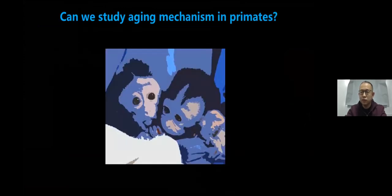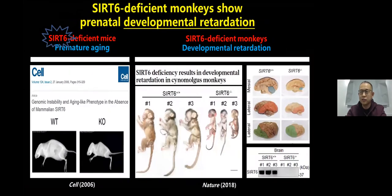The first question I want to ask is: can we use primate animal models to study the mechanism of aging? We focus on SIRT6, a well-known longevity gene. SIRT6 knockout causes premature aging in mice. To test whether SIRT6 is a longevity gene in primates, we generated SIRT6 knockout monkeys through CRISPR-Cas9.